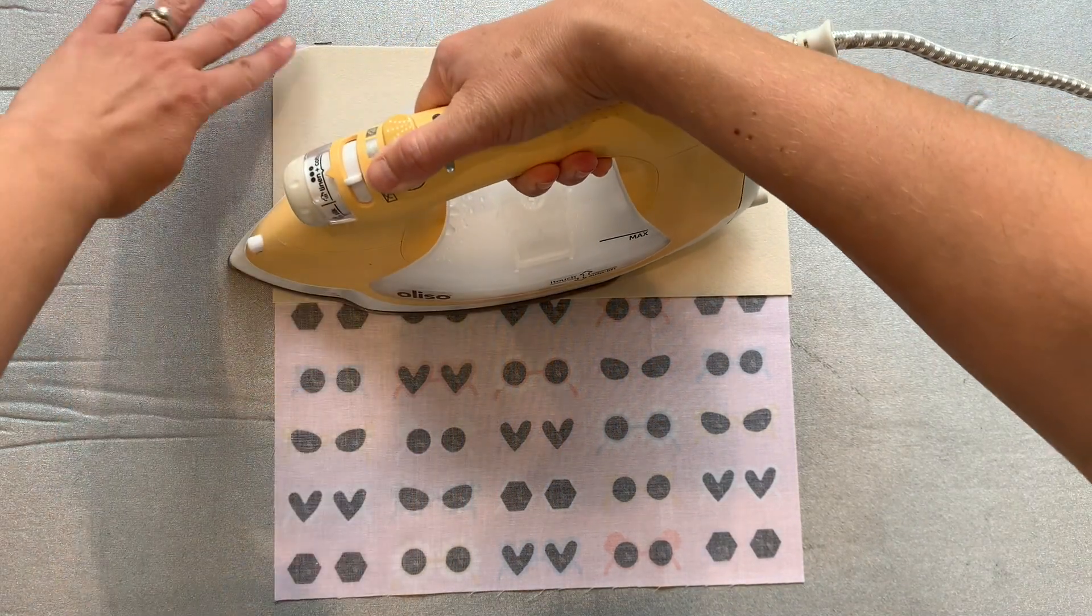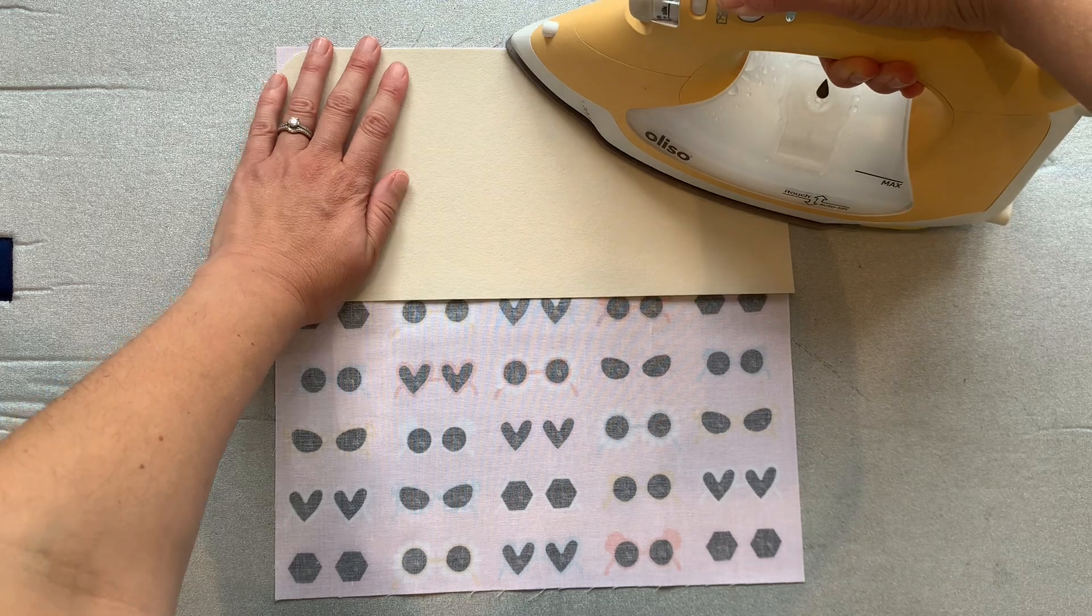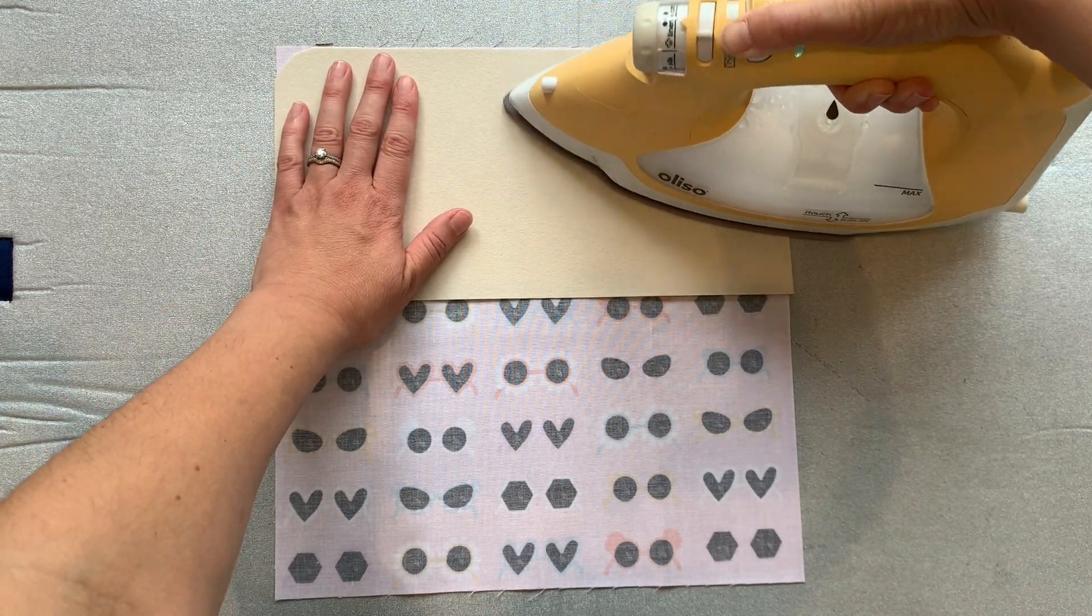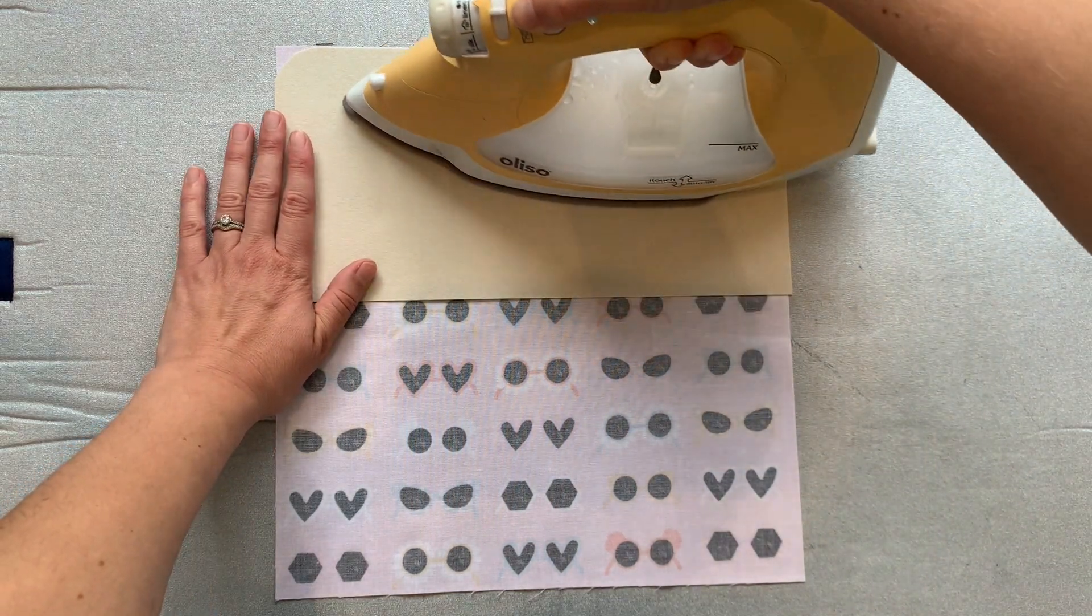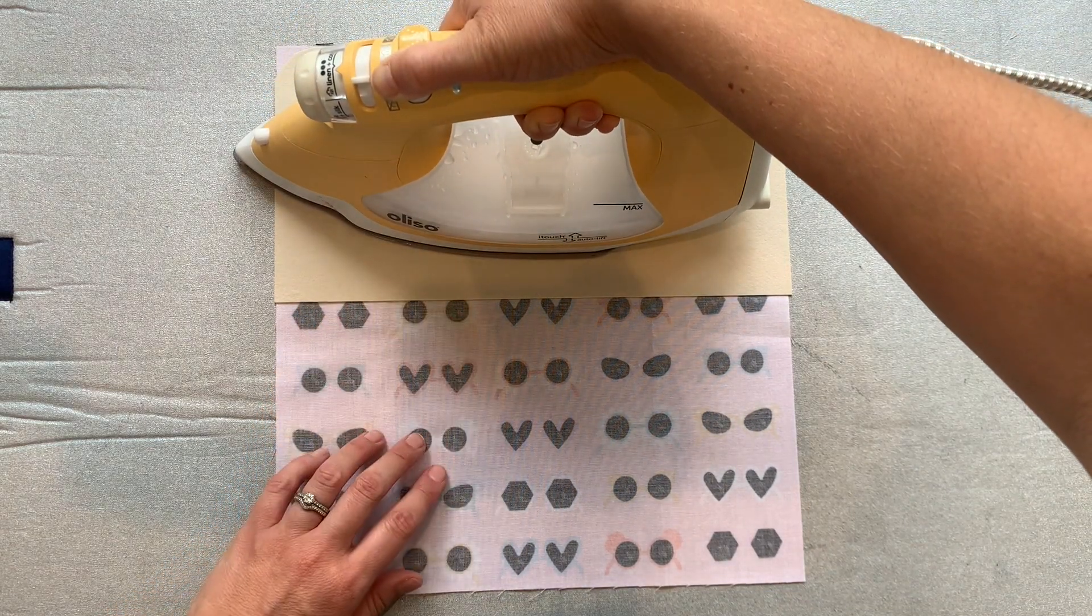And then we just want to fuse that in place. Now the decoville has a shiny side. That's the glue side. And that's the side that you want to put face down on your fabric, on the back of your fabric. And it should be the matte side, the non-gluey side that you're pressing with your iron.